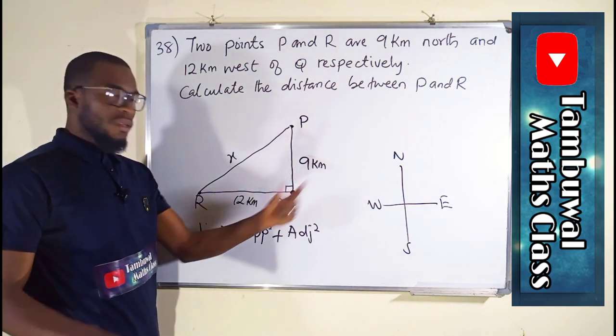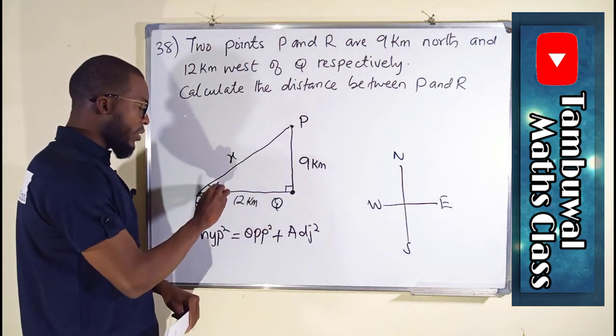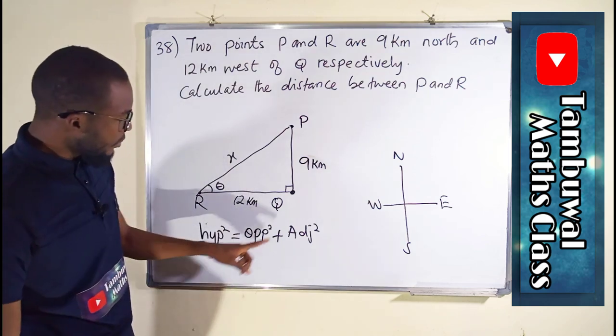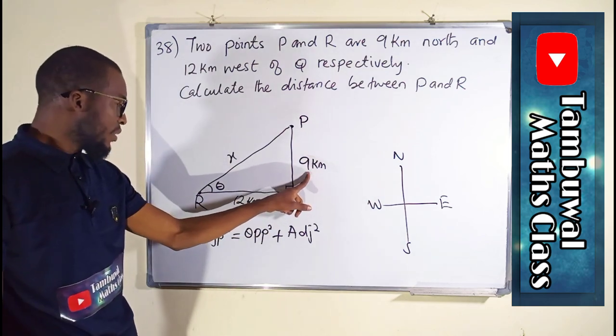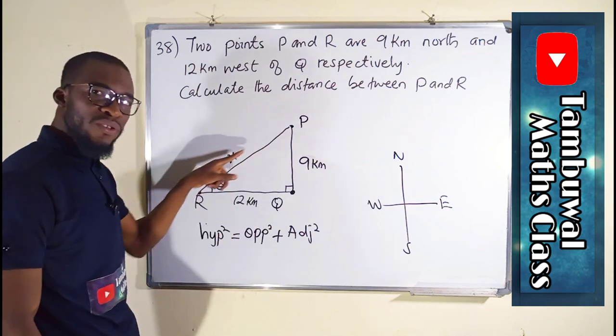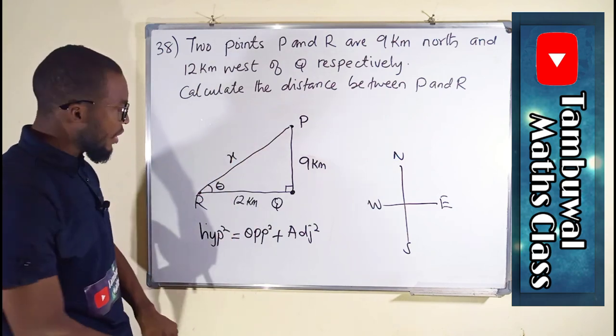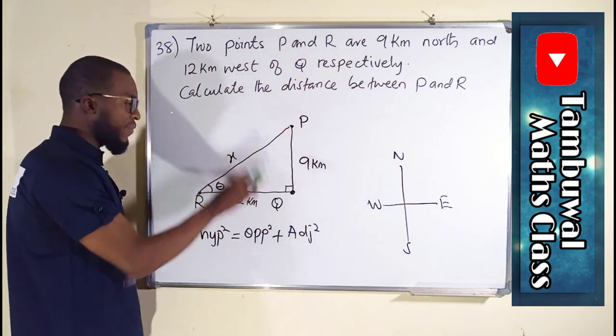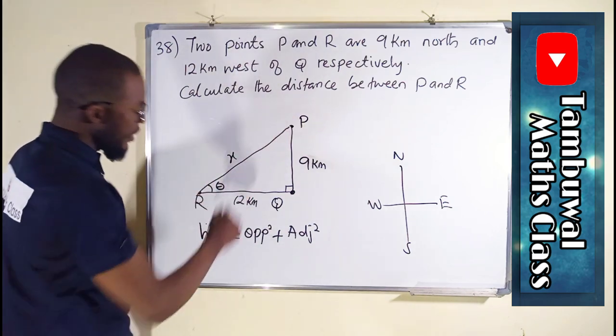This is opposite. If this is our angle, acute angle, this is the opposite, and this is the adjacent, and the hypotenuse, which is the longest side, is what we are looking for. So now we can just substitute here and find the corresponding distance.